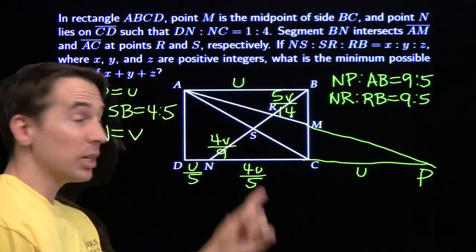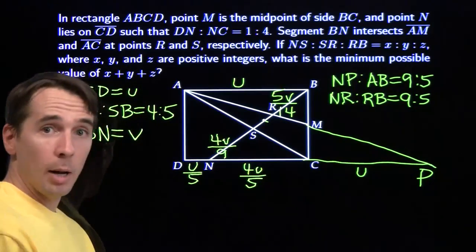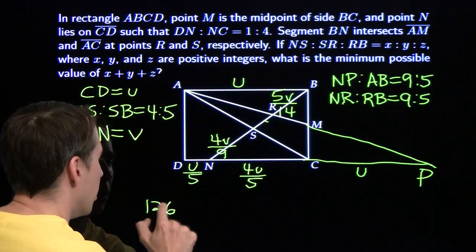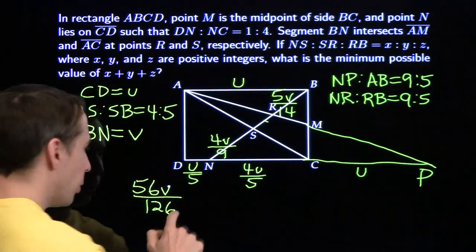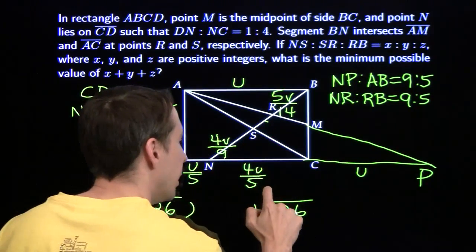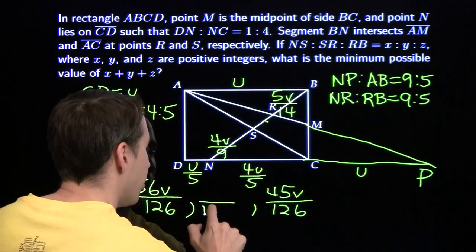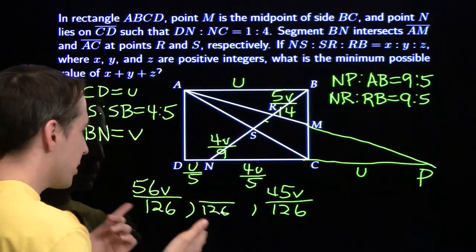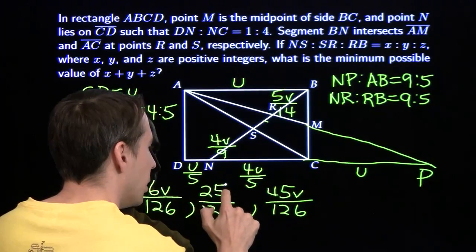We've got NS as 4V over 9 and RB as 5V over 14, but we need a common denominator. 9 times 14 is 126. So NS is 56V over 126 and RB is 45V over 126. All three pieces must add up to V, so the numerators must add up to 126. The two known pieces sum to 101, meaning the middle piece SR is 25V over 126.